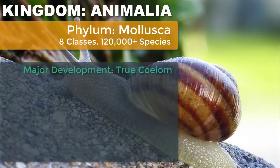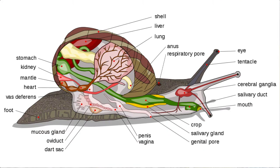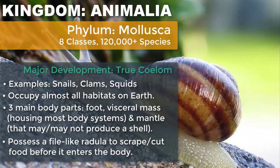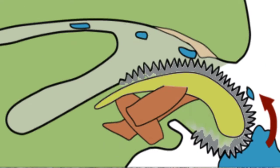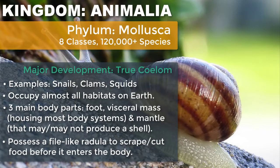Now we're getting into organisms you will probably recognize a little bit more easily. The first is what we refer to as a mollusk. Mollusks are fairly diverse in their appearance — you can have clams, squid, or even octopuses in this grouping — but they all share some characteristics. They have three main unsegmented body parts: a foot, a visceral mass, and a mantle. In most, that mantle secretes a shell. Almost all of them have a special file-like structure called a radula — almost like teeth — used for scraping and boring to allow them to feed. They all possess complete digestive systems, circulatory systems, and gills.